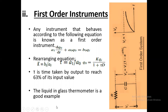Moving towards the first order instrument: any instrument that behaves according to the first order equation is known as a first order system instrument. If we connect R and C with each other, the first order behavior can be produced.